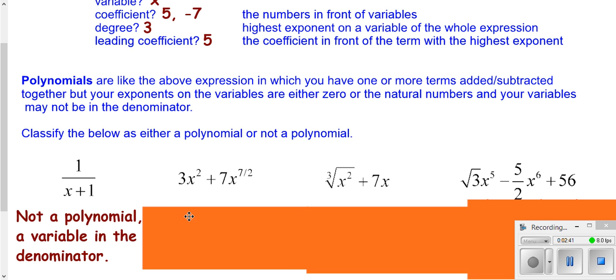The second one is also not a polynomial because we have a fractional exponent. Because it says up here, our exponents and our variables have to be 0 or natural numbers. And while 7 over 2 is a rational number, it's not a natural number.